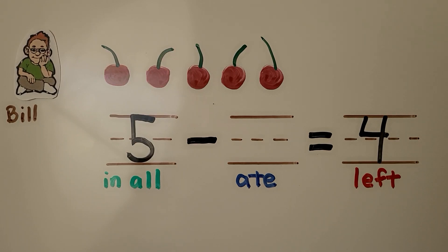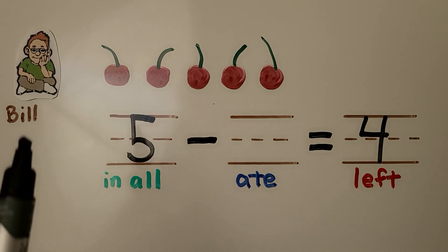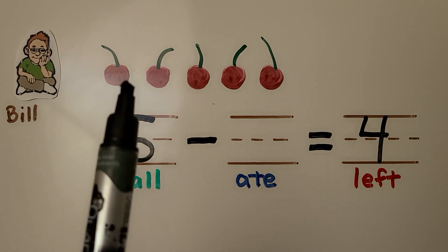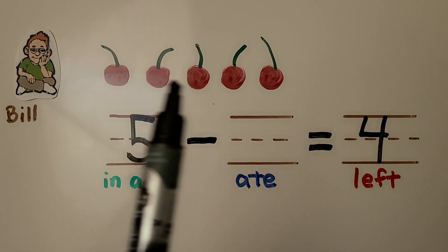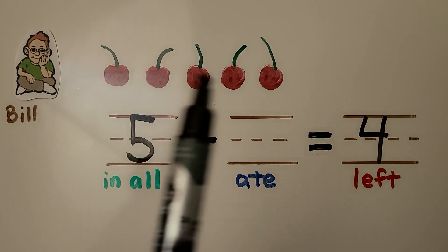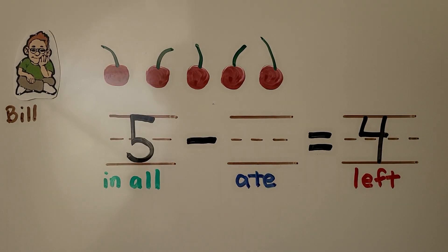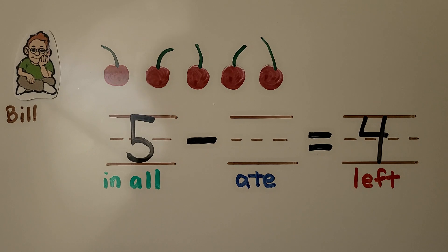This is Bill. Bill has a set of five cherries. He ate some. Then he had four cherries. How many cherries did Bill eat?